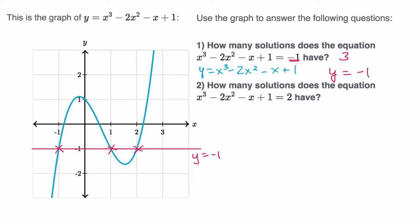What about the second situation? How many solutions does the equation, all of this business, equal two have? Well, same drill. We could set y equals to x to the third minus two x squared minus x plus one. And then we could think about another function. What if y is equal to two? Well, y equals two would be up over there.